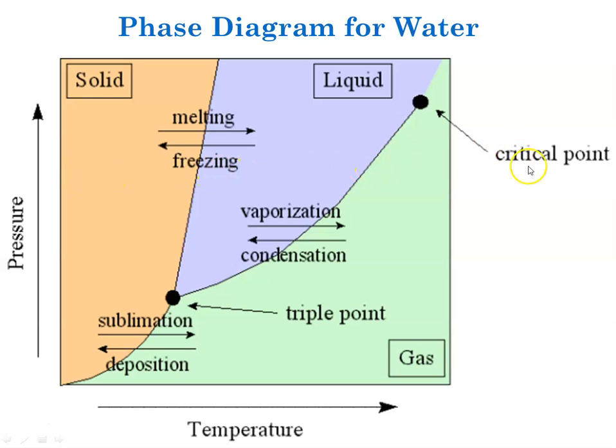And also, we talk about a critical point, a pressure and temperature beyond which the substance may only exist as a gas.